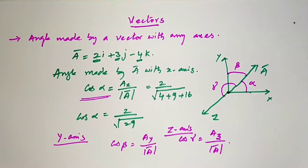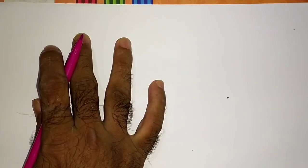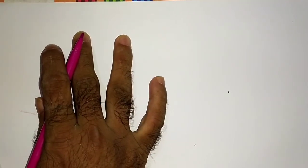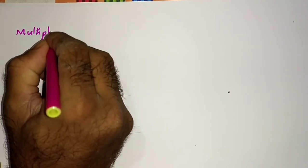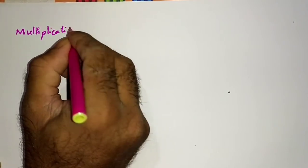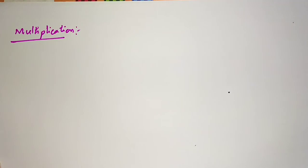Next, coming to today's topic — we are going to discuss the multiplication of vectors. We have learned addition and subtraction of vectors; now let us look at multiplication.